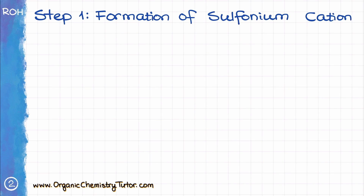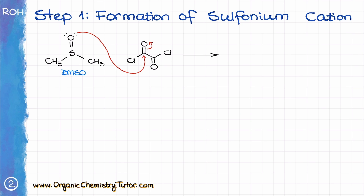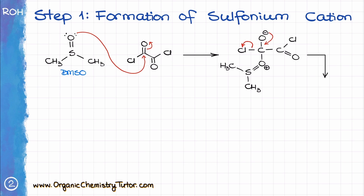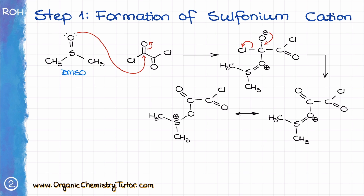The Swern oxidation proceeds in two unrelated phases. In the first one, we need to create the sulfonium cation that will react with our alcohol. We make that sulfonium ion by reacting DMSO with oxalyl chloride. The first step in this reaction is a typical nucleophilic attack from the DMSO onto the acyl chloride functional group, giving us the tetrahedral intermediate with a minus on the oxygen atom. Then we kick the chlorine out, resulting in the sulfur-containing group sitting on our molecule instead of chlorine. I'm showing two possible resonance structures here because the mechanism of the next step is going to be a little bit easier to show from the resonance structure.